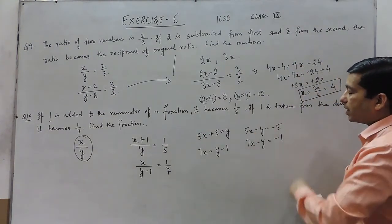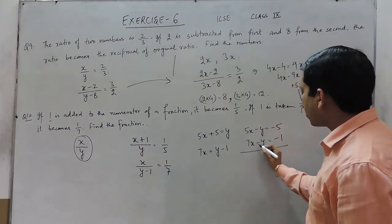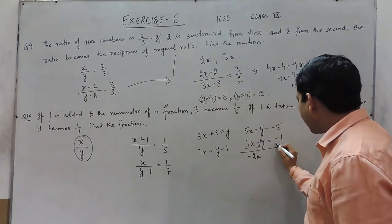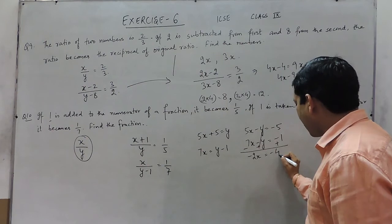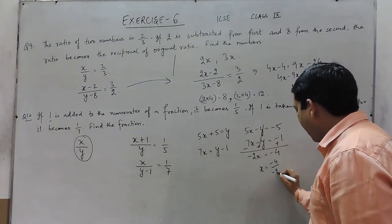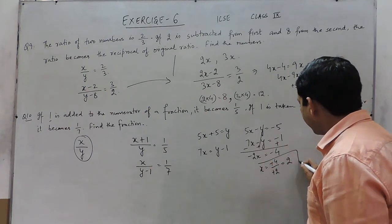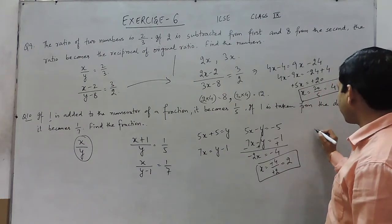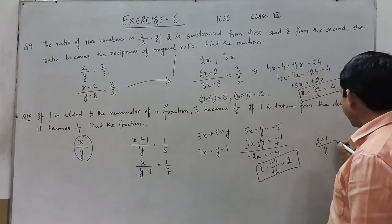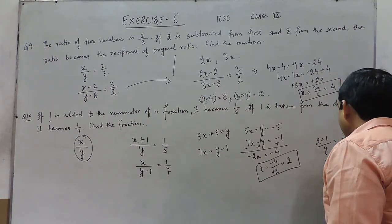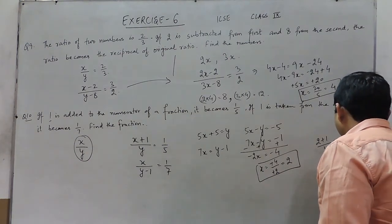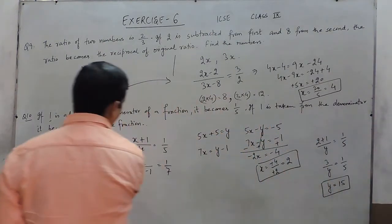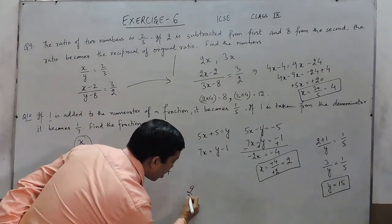So these are the two equations. The coefficient of y in both are equal, so we subtract them. The y terms cancel out, leaving minus 2x equals minus 4, so the value of x becomes minus 4 upon minus 2, which equals 2. When we put the value of x as 2 in the first equation, it becomes 2 plus 1 upon y equals 1 upon 5, that means 3 upon y equals 1 upon 5, and the value of y becomes 15.